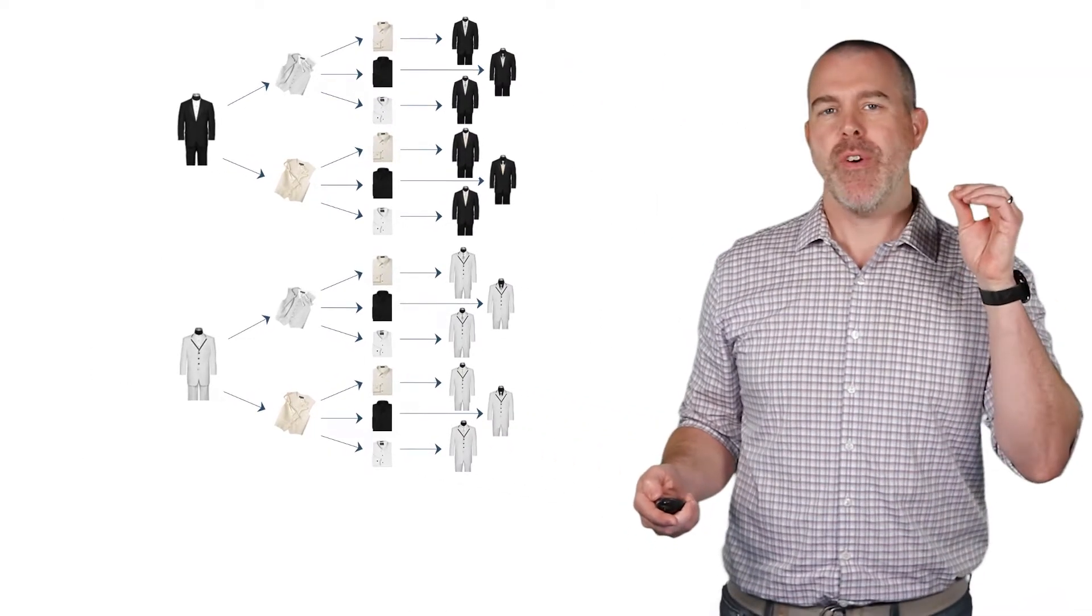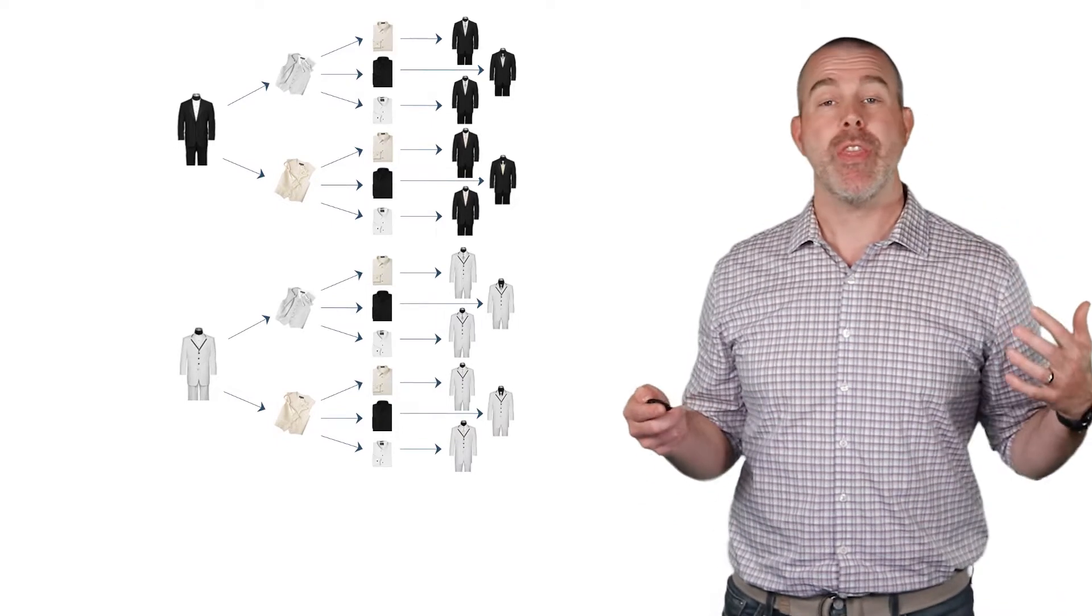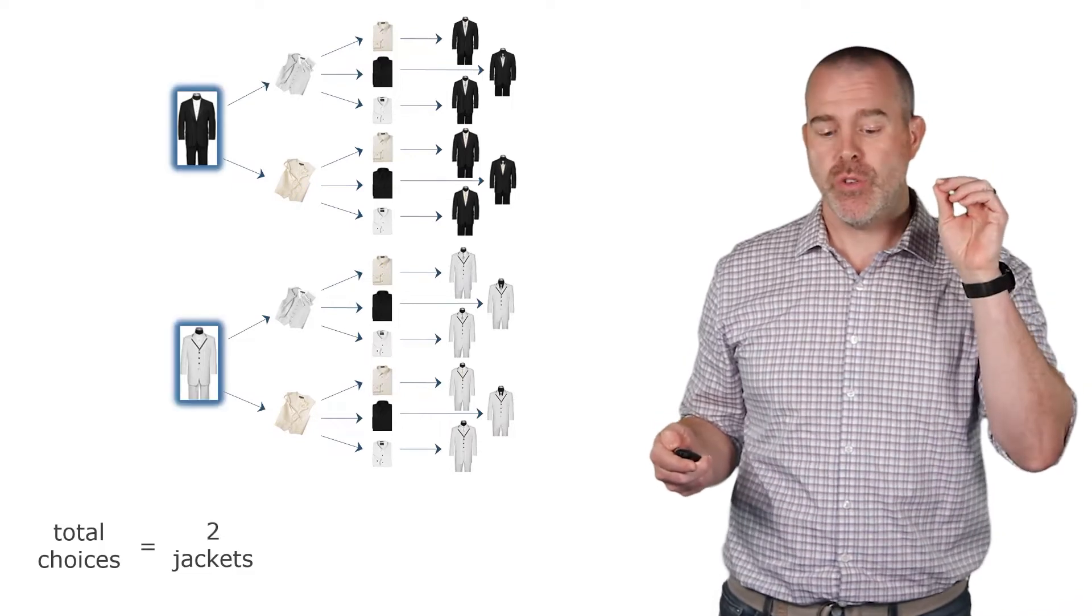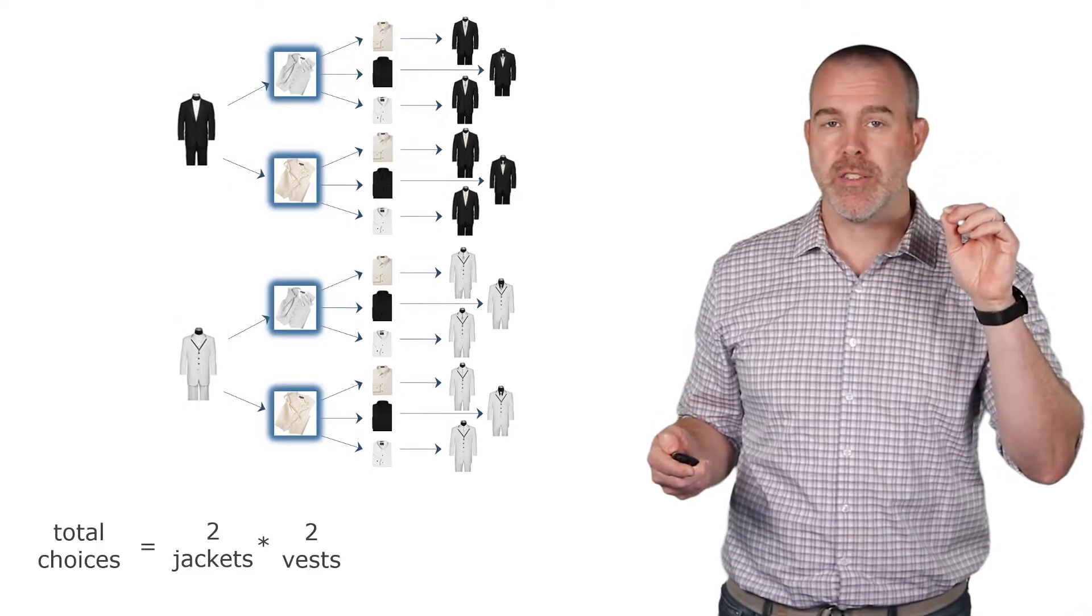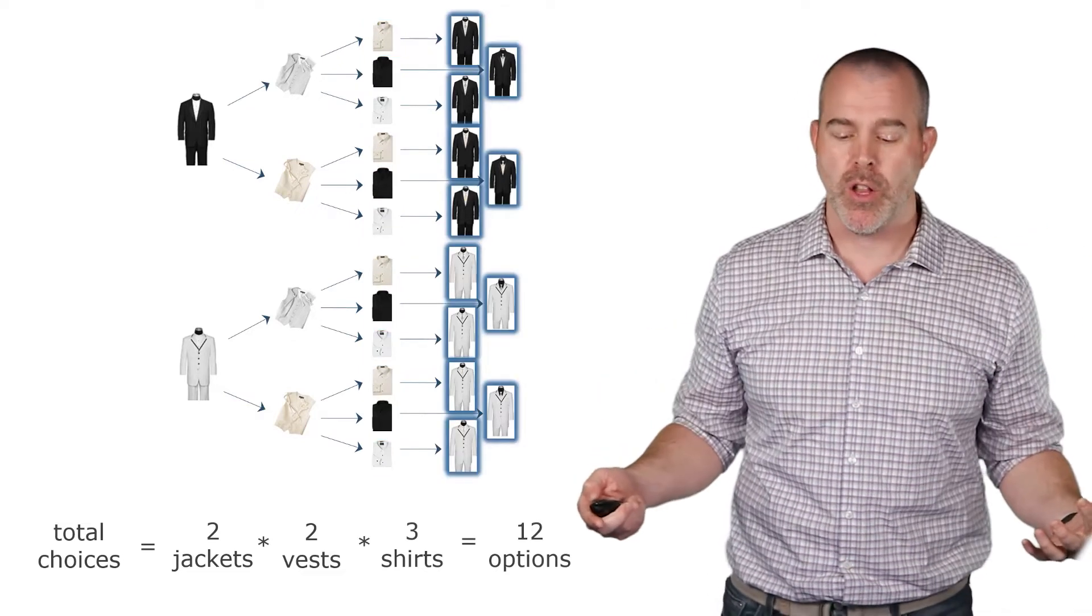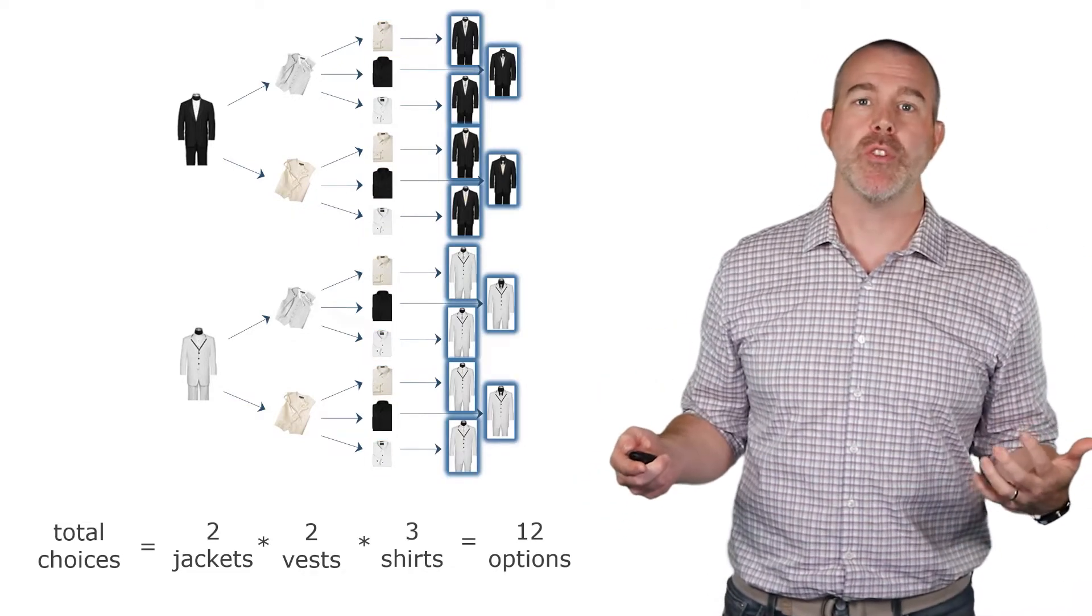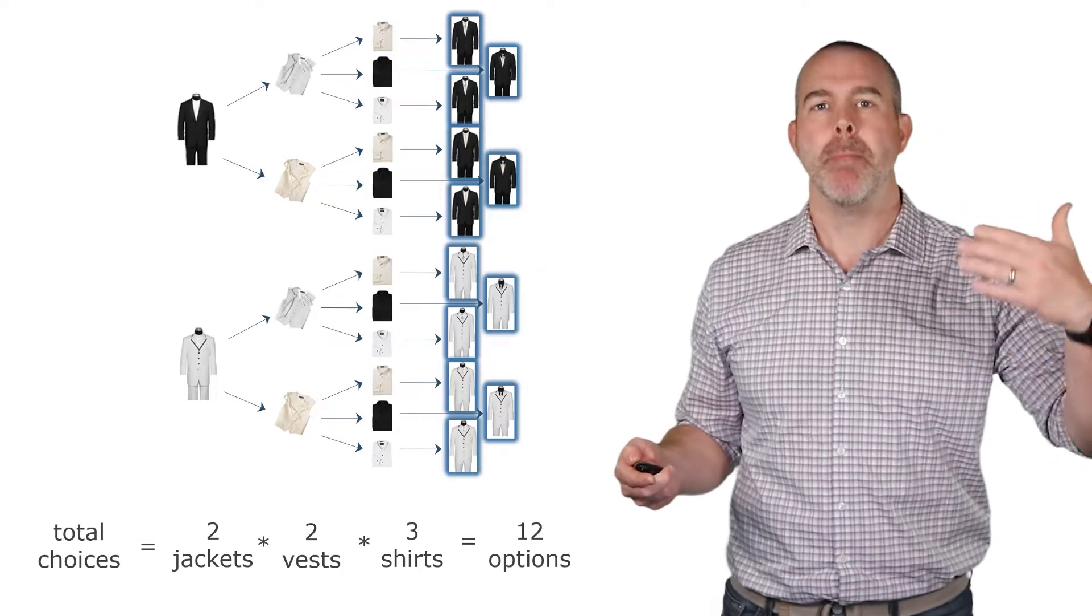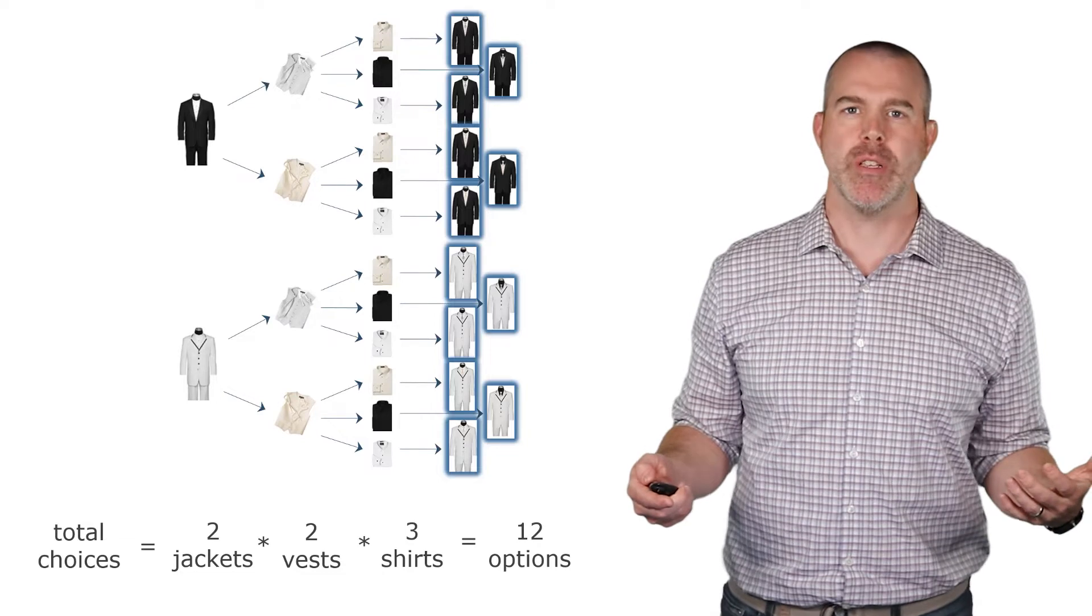And the key is if we focus on what happened here to think about a generalized way to do this, we have the total choices. We have two jackets, two vests, three different types of shirts. We multiply all of those together to get the 12 total options. So this is the key here is we are multiplying the number of ways to make each choice.